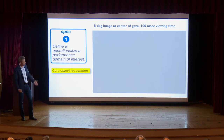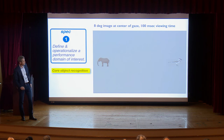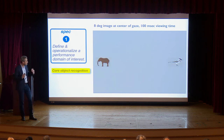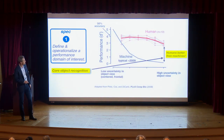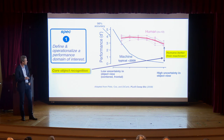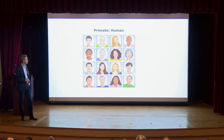Here's an example: an image is shown briefly — I hope you noticed it was a bird and not an elephant. Around 2009, machine performance at high object uncertainty was much worse than human performance. Humans are substantially better than machines in 2009 at this problem. This space is what we call core recognition.